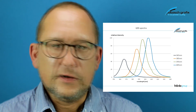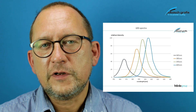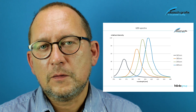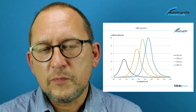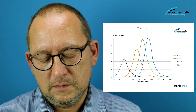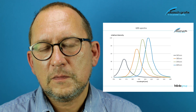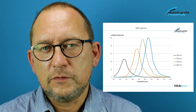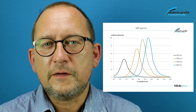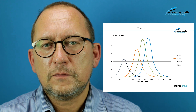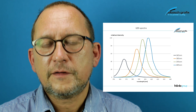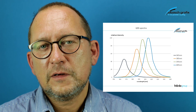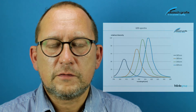As the LEDs only emit a certain wavelength which is in the UVA range, there is also no generation of infrared radiation, which is the case with conventional gas discharge lamps. Another important fact: since the LEDs only work in UVA, they are not generating ozone. Ozone is generated only at wavelengths below 250 nanometers, and LEDs do not generate these wavelengths.